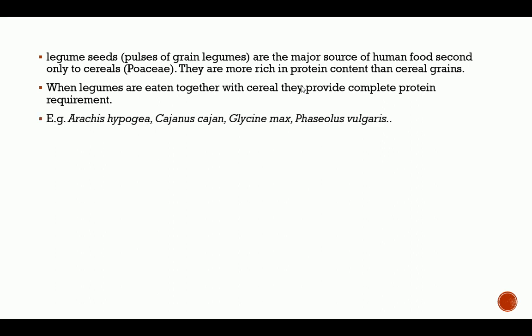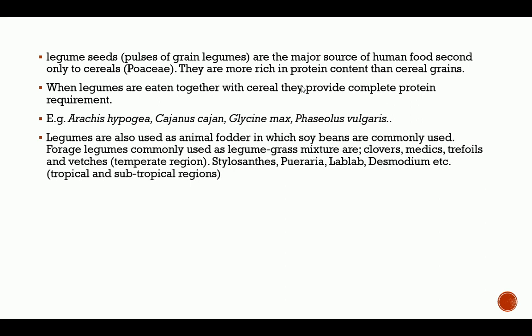Examples of legumes used for human food include Arachis hypogaea, Cajanus cajan, Glycine max, Phaseolus vulgaris, and a host of others. Legumes are also used as animal fodder, in which soybeans are commonly used. Forage legumes commonly used as legume-grass mixtures include clovers, medics, trefoils, and vetches, which are mostly used in temperate regions such as the United States and North America. Stylosanthes, Pueraria, Lablab, and Desmodium are used in tropical and subtropical regions such as Africa.